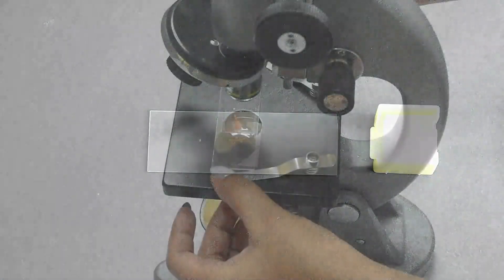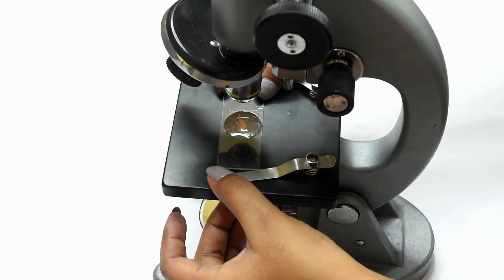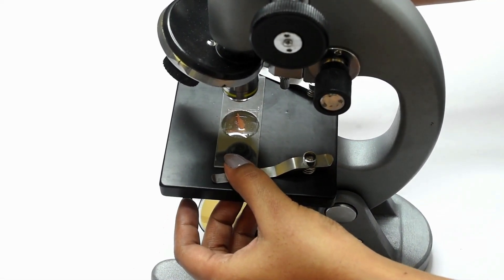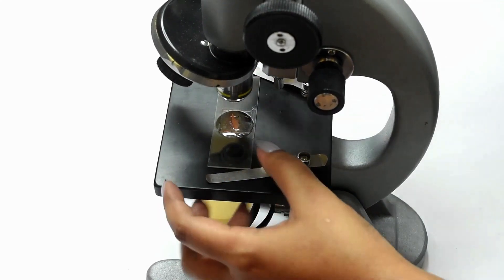Here, our slide is ready to be observed under the microscope. Once the adjustments are done, we will be able to see the stomata and the guard cells.